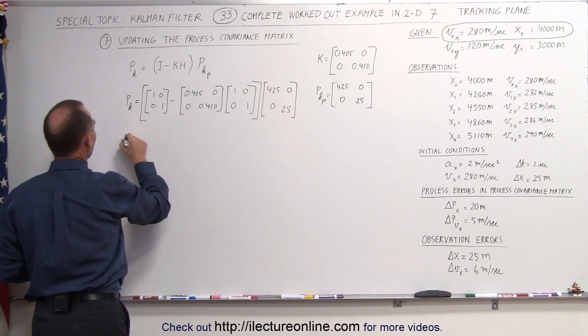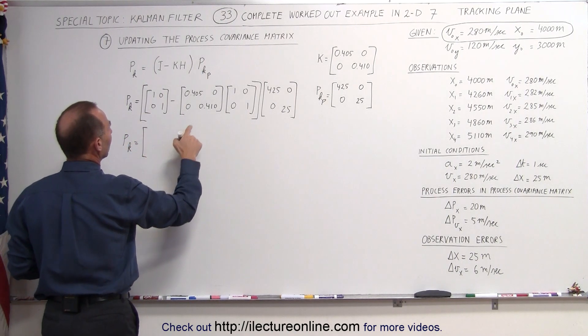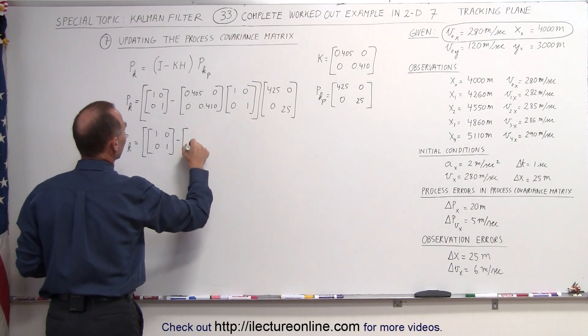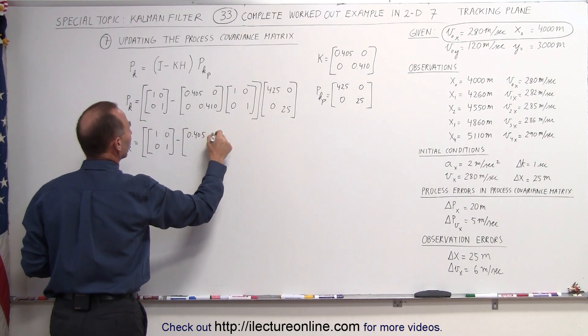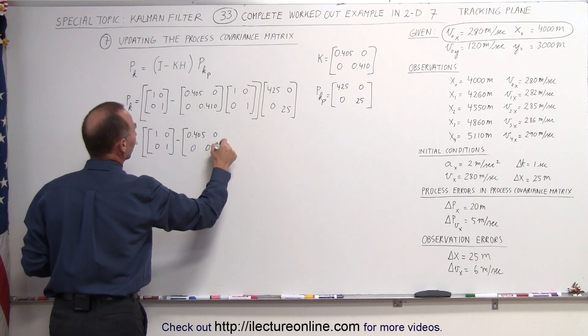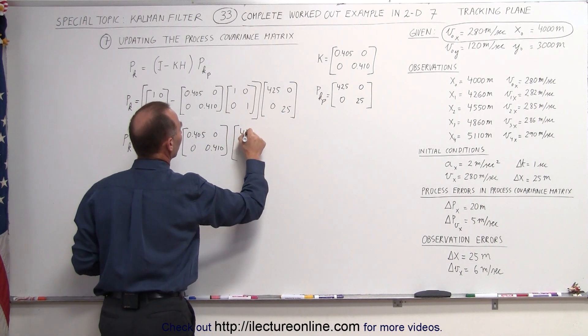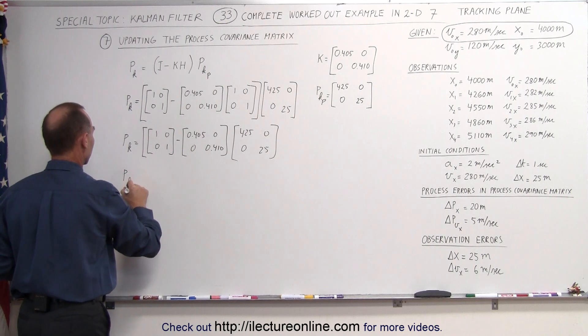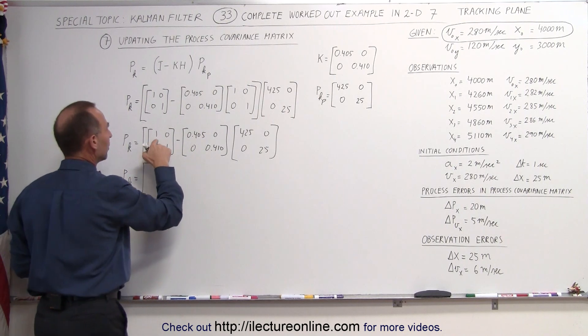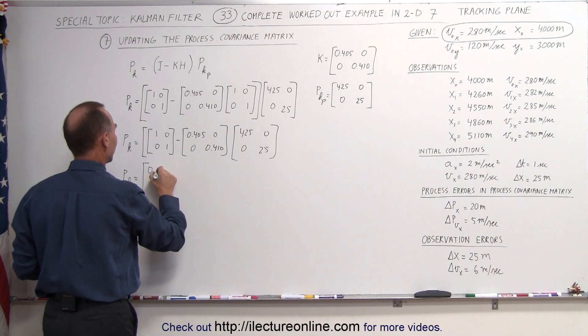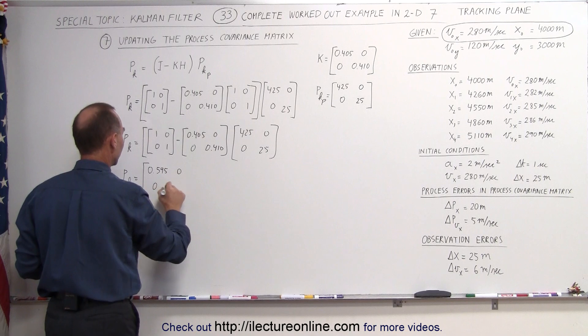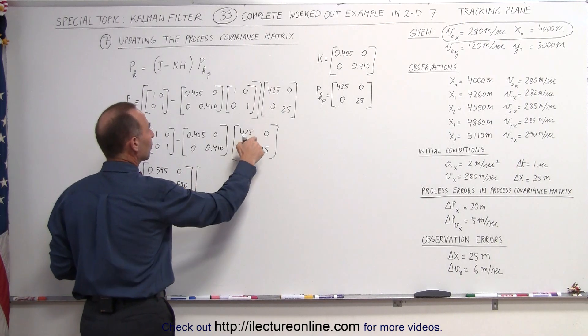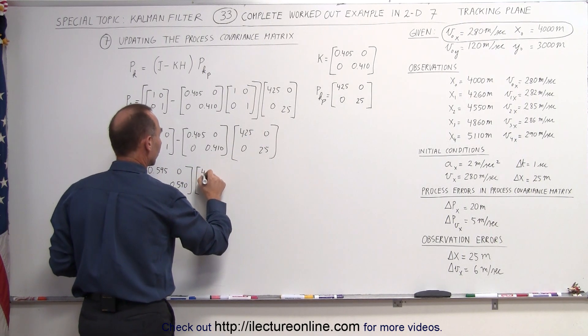This now simplifies to the following, so the new current process covariance matrix is equal to 1, 0, 0, 1, subtract from that 0.405, 0, 0, 0.410 multiplied times 425, 0, 0, and 25. Okay, now simplifying this portion right here is equal to, this would be 0.005, 0, 0, and 0.590, because when you add those together you get 1 again, multiply that times the previous predicted covariance matrix.